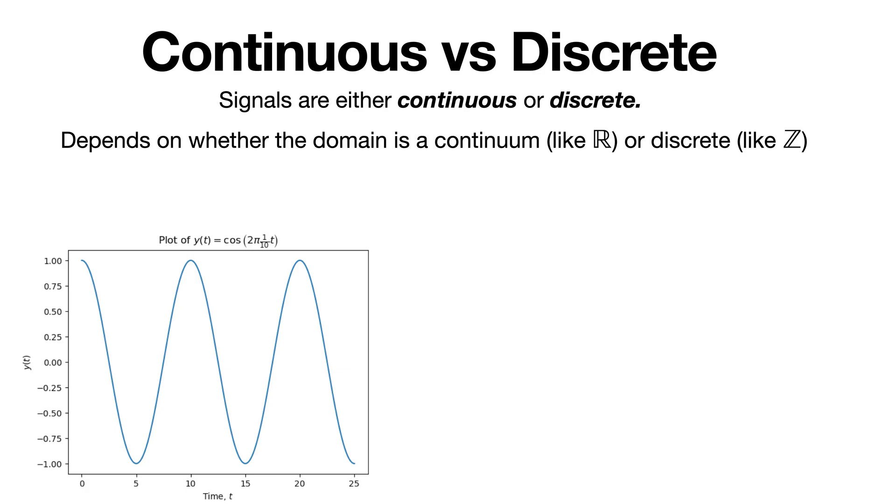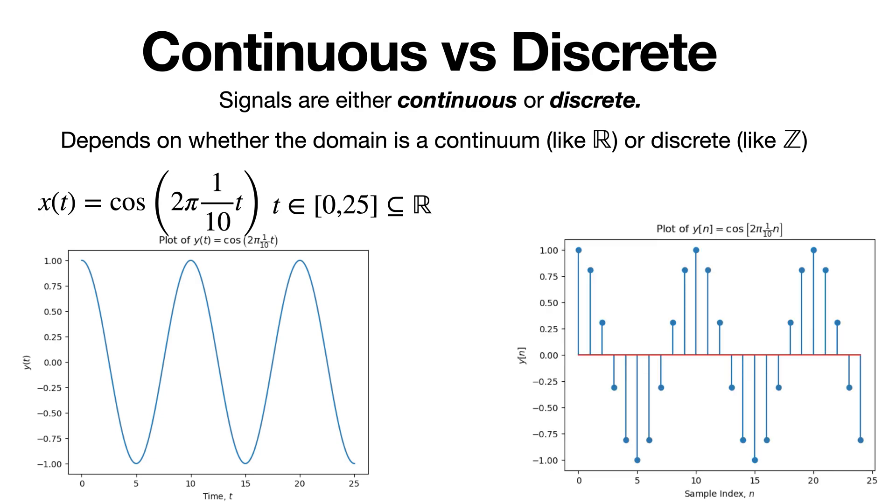One example of a real signal is x of t equals cosine of 2 pi 1 over 10 t, where the time variable t is defined over a subset of the real number line. An example of a discrete signal is x of n equals cosine of 2 pi 1 over 10 n, where n is a sample index which takes on integer values from 1 to 25. So here we have continuous, and here we have discrete.